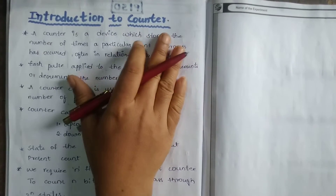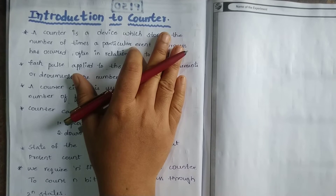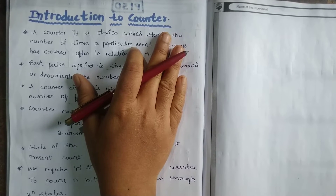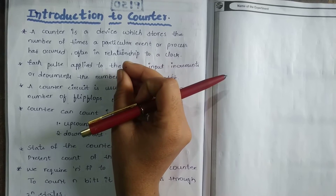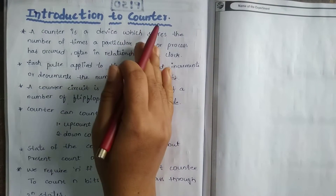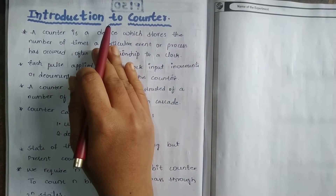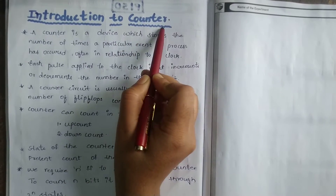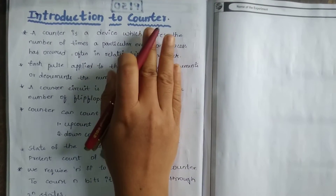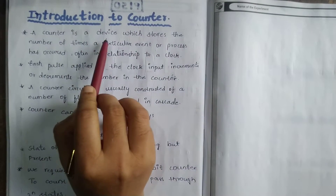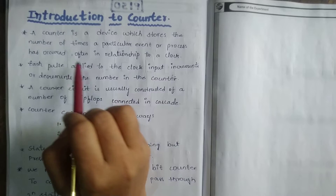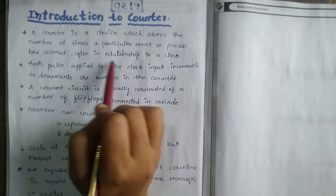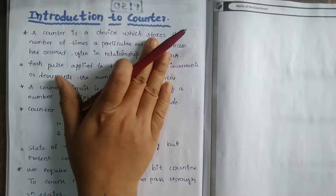Introduction to counters. So today we will learn about counters. We know that in applications of flip-flops, counters and frequency dividers are included. A counter is a device which stores the number of times a particular event or process has occurred, often in relationship to a clock.